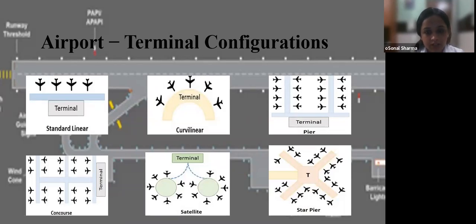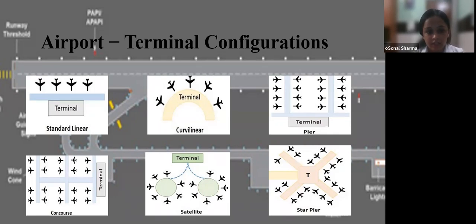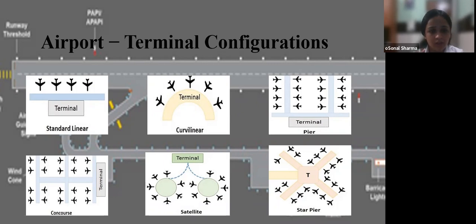Terminal configurations vary by design. The standard linear layout is exemplified by Detroit Metropolitan Airport. The axis curvilinear layout is exemplified by Munich Airport. The pier or spire configuration is used at Amsterdam, Chitose Airport Japan, and Los Angeles. The concourse configuration is used at Atlanta International Airport, Tom Bradley International Terminal Dubai, and O'Hare International Airport Chicago. The star terminal configuration is used at Geneva Airport Switzerland and Orlando International Airport Florida.